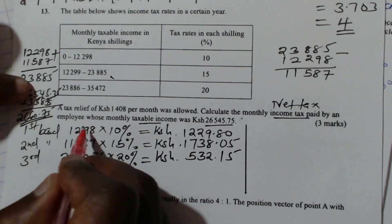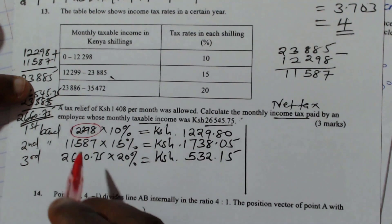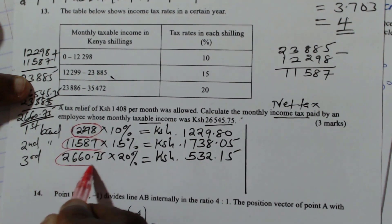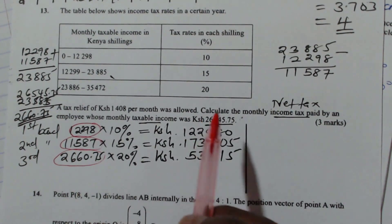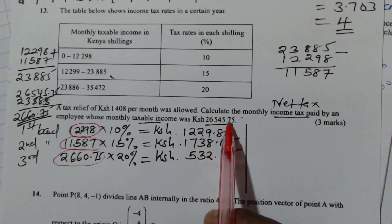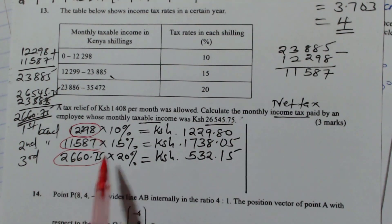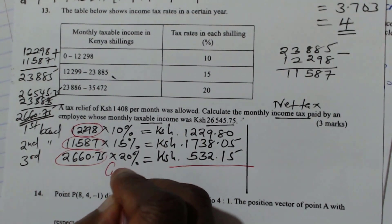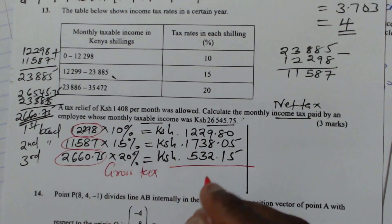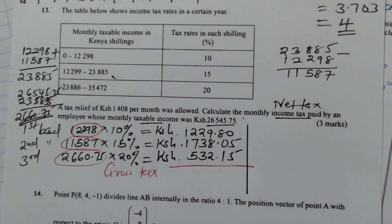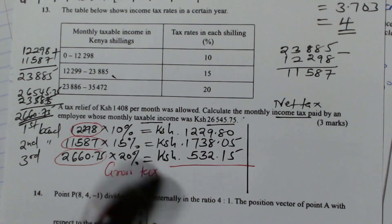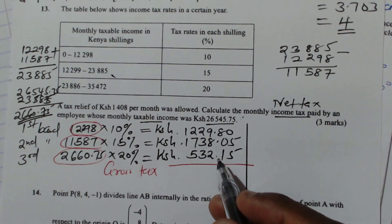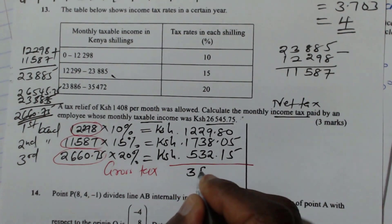When you add everything here, when you add 1229.80 plus 1738.05 plus 532.15, you will definitely get 26,545.75 cents. That is the taxable income. So when you add everything now here, we will get a gross tax. So we add and that will give 3500.